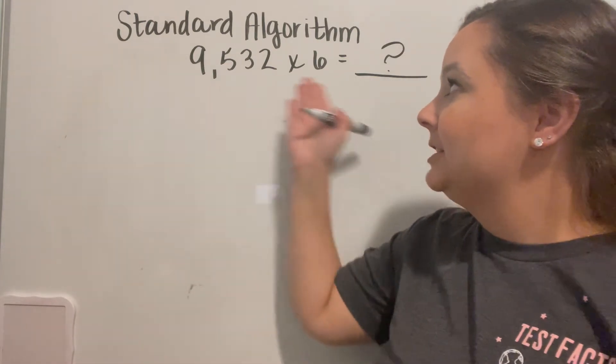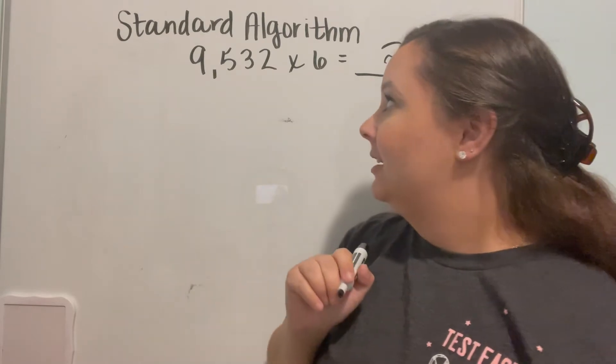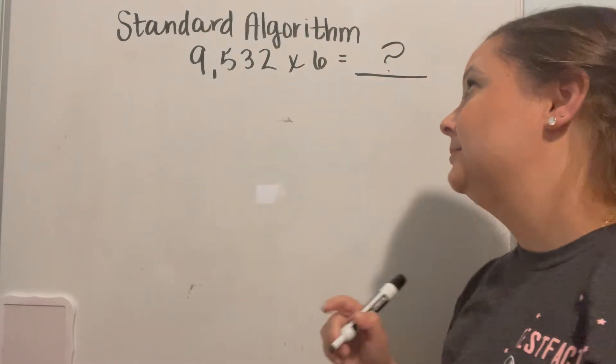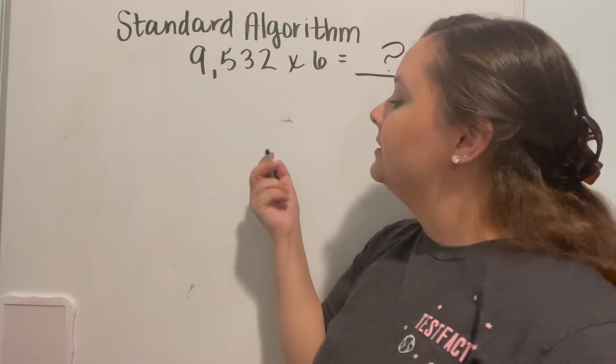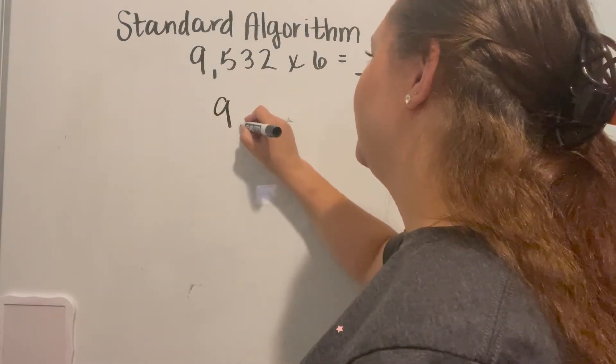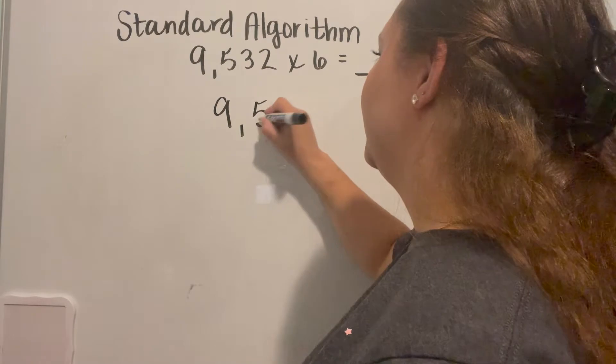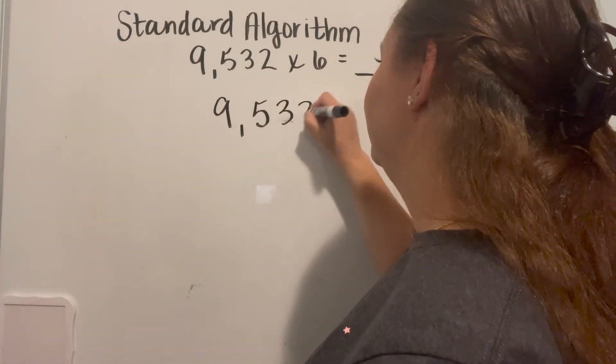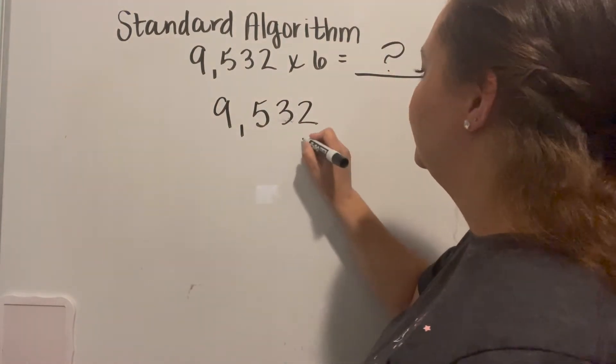So we have our four digit by our one digit problem up here of 9,532 times 6. So I'm going to set it up in standard algorithm format with my larger number on top. So we have 9,532 multiplied by 6.